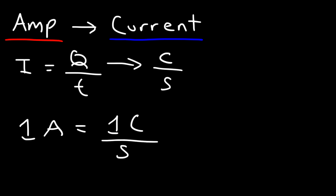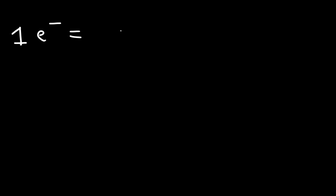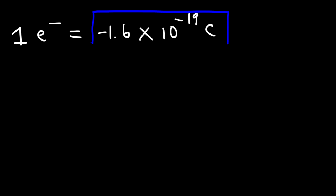What is a coulomb, and how does it relate to electrons? It turns out that one electron has an electric charge of negative 1.6 times 10 to the negative 19 coulombs. So how many electrons are represented by one coulomb of charge — or rather, negative one coulomb of charge, since electrons are negatively charged?